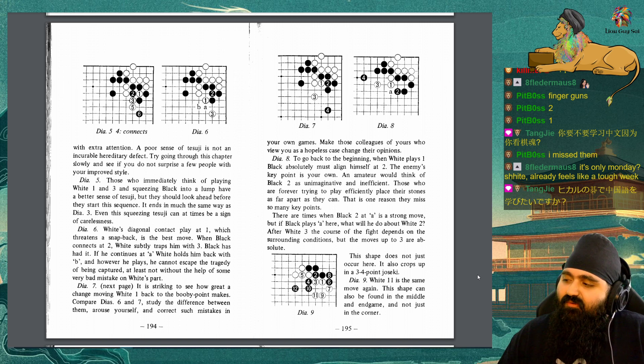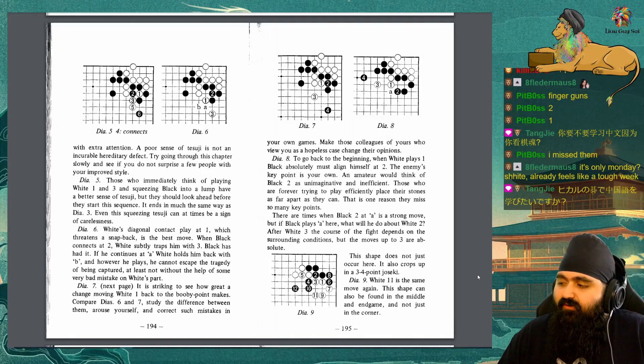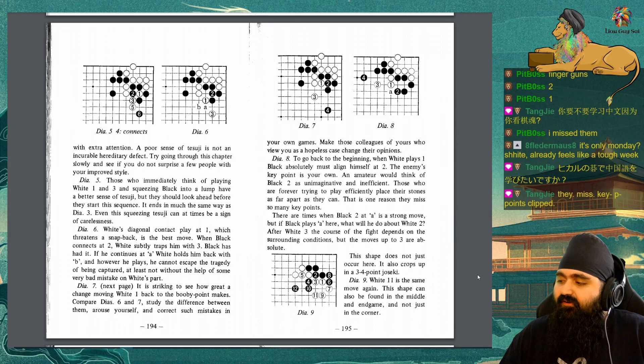Diagram 8: To go back to the beginning, when white plays 1, black absolutely must align himself at 2. The enemy's key point is your own. An amateur would think of black 2 as unimaginative and inefficient. Those who are forever trying to play efficiently place their stones as far apart as they can. That is the one reason they miss so many key points. There are times when black 2 at A is a strong move. But if black plays A here, what will he do about white 2? After white 3, the course of the fight depends on the surrounding conditions. But the moves up to 3 are absolute.